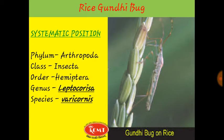Next, we will discuss Rice Gundibag. सबसे पहले हम Rice Gundibag की systematic position की बात करें, तो यह Phylum Arthropoda को represent करता है — that means jointed legs. Class: Insecta, Order: Hemiptera, Genus: Leptocoriza, Species: varicornis.